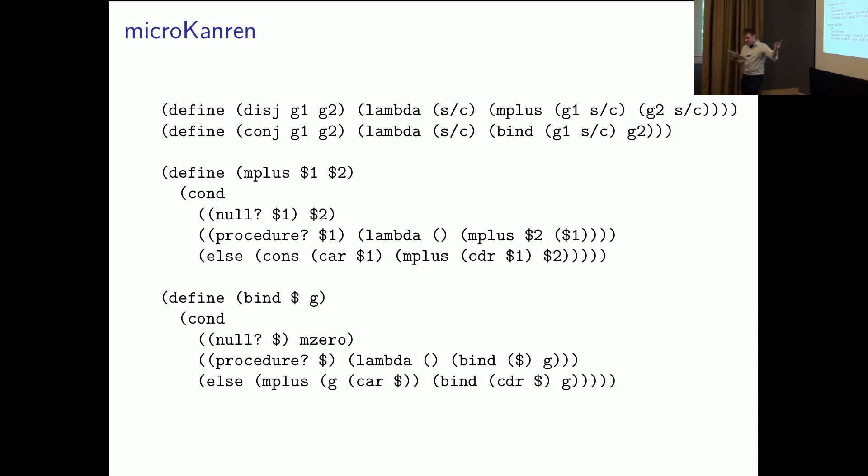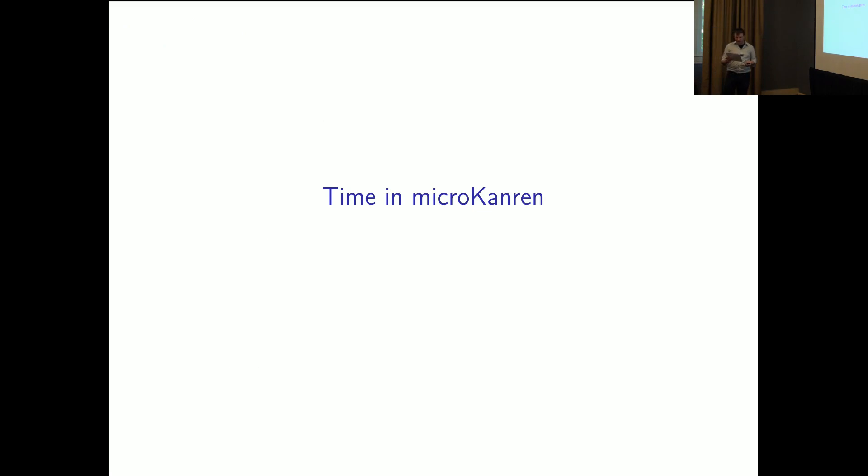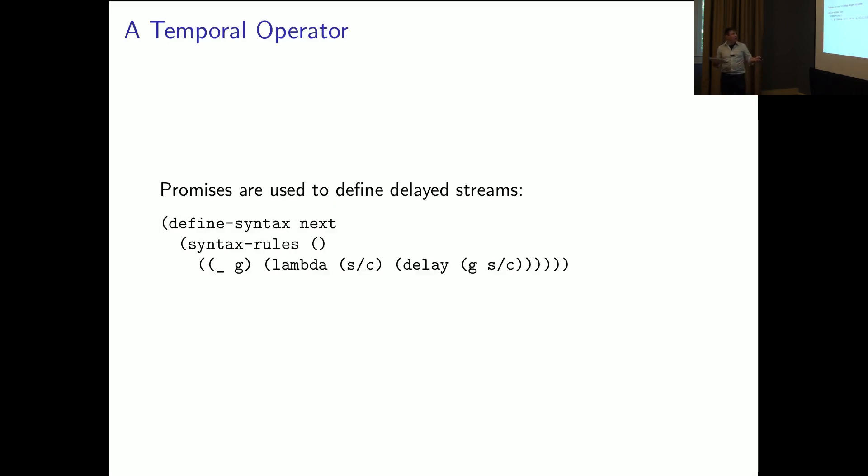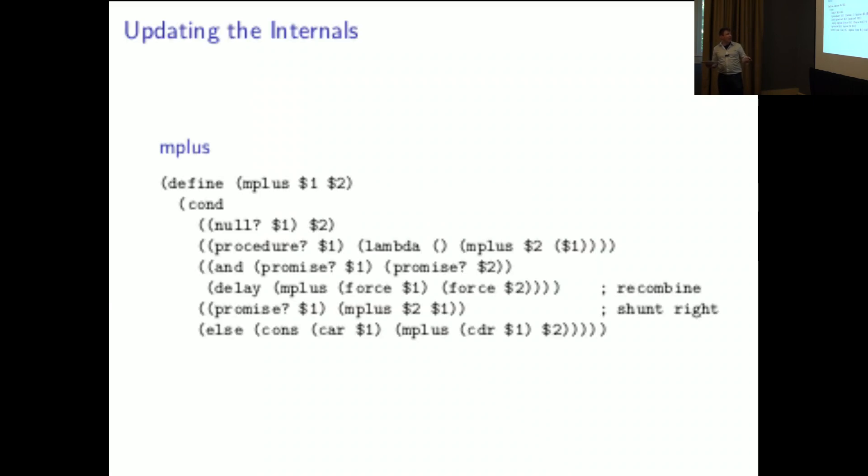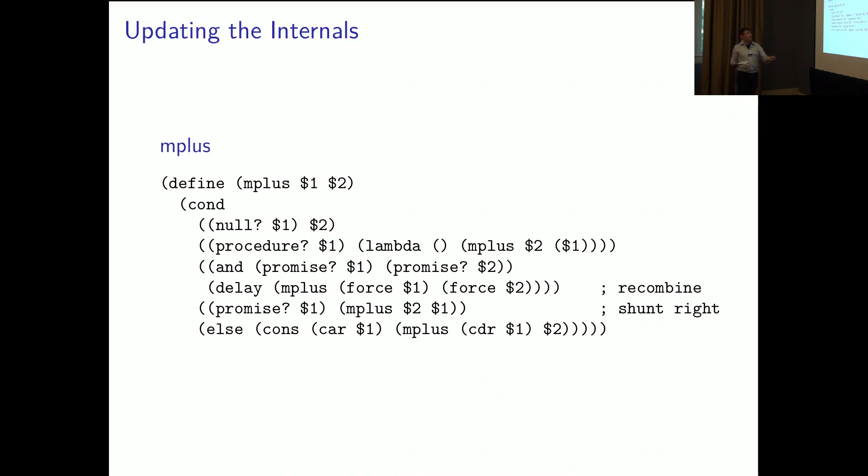And so how to model time in Micro Kanren. What he did was adding a third stream type that he called delayed streams to represent goals that are delayed until a later point in time. And we represent delayed streams by promises and construct them with a temporal goal constructor next like the next of x operator we saw before. This uses an explicit delay operation and his version of M plus differentiates between procedures created by lambdas and actual promises that come from delays.